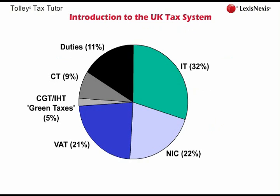The remaining slice is from capital taxes and green taxes. Capital taxes are capital gains tax, inheritance tax, stamp duty, and stamp duty land tax. Capital gains tax is the tax levied when individuals sell assets and make a profit. Green taxes include aggregates levy and air passenger duty.